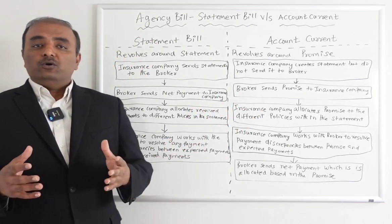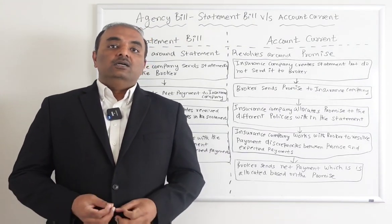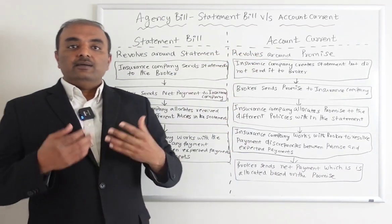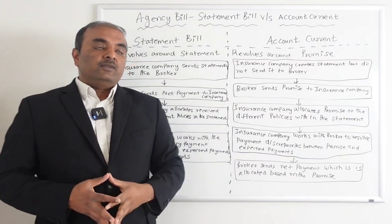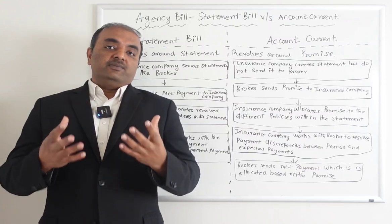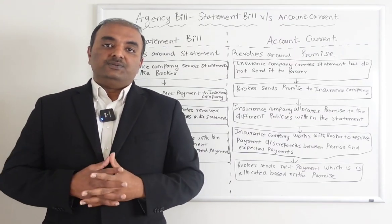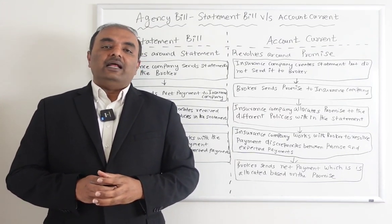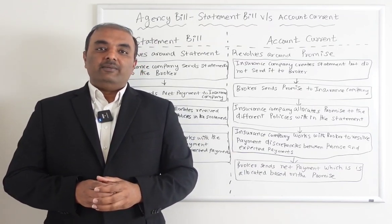Both approaches have advantages and disadvantages — it all depends on the agent's expectations. You can have agents under account current, where they send a promise and the insurance company uses that promise. Or you can have agents under statement bill, where agents send payments based on the statement received and discrepancies are addressed afterward. I hope you liked my training video. If you did, please subscribe to my YouTube channel. Have a great day, bye-bye.